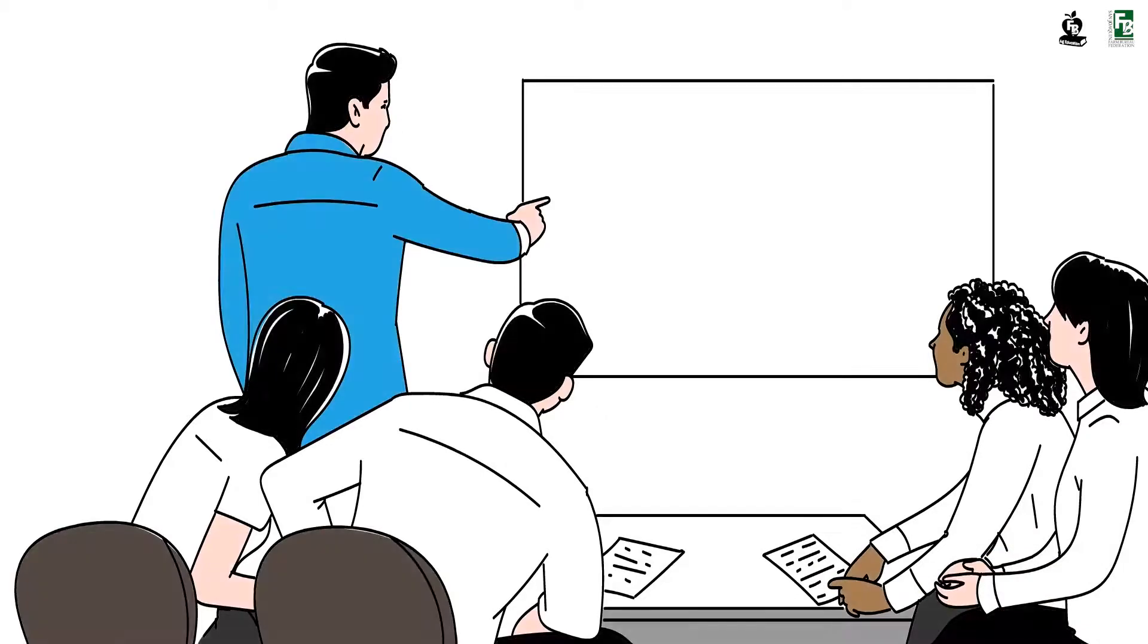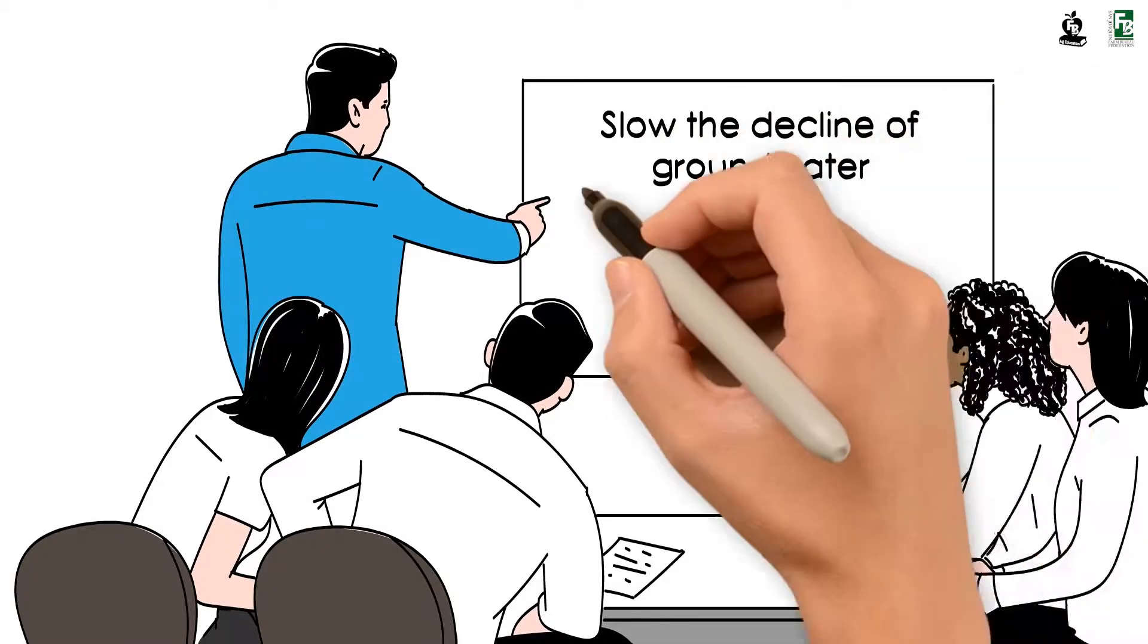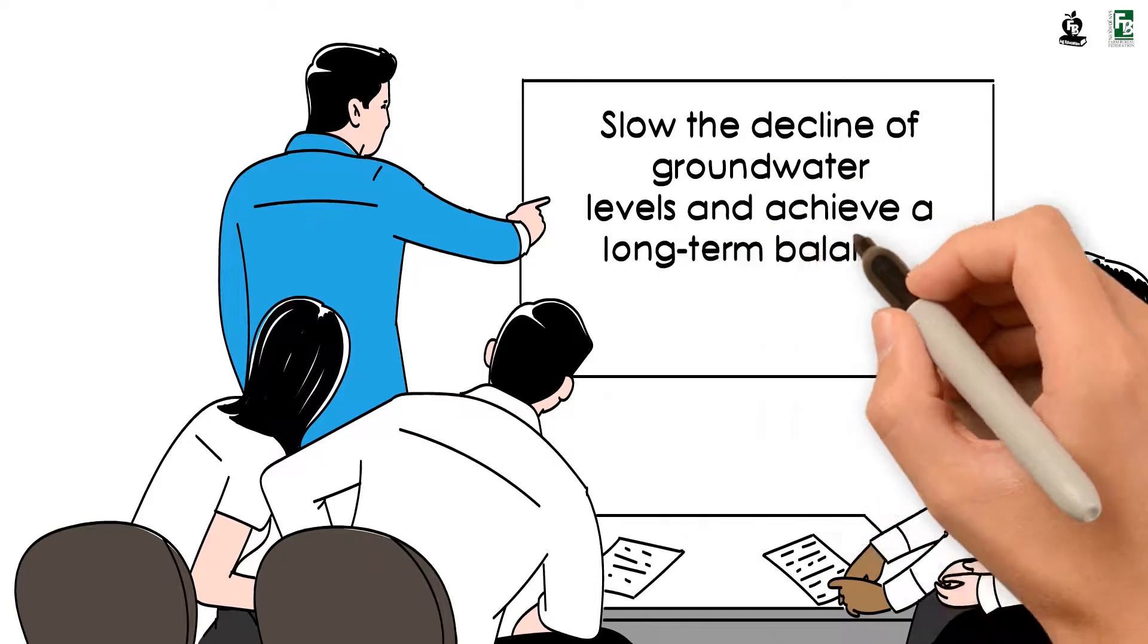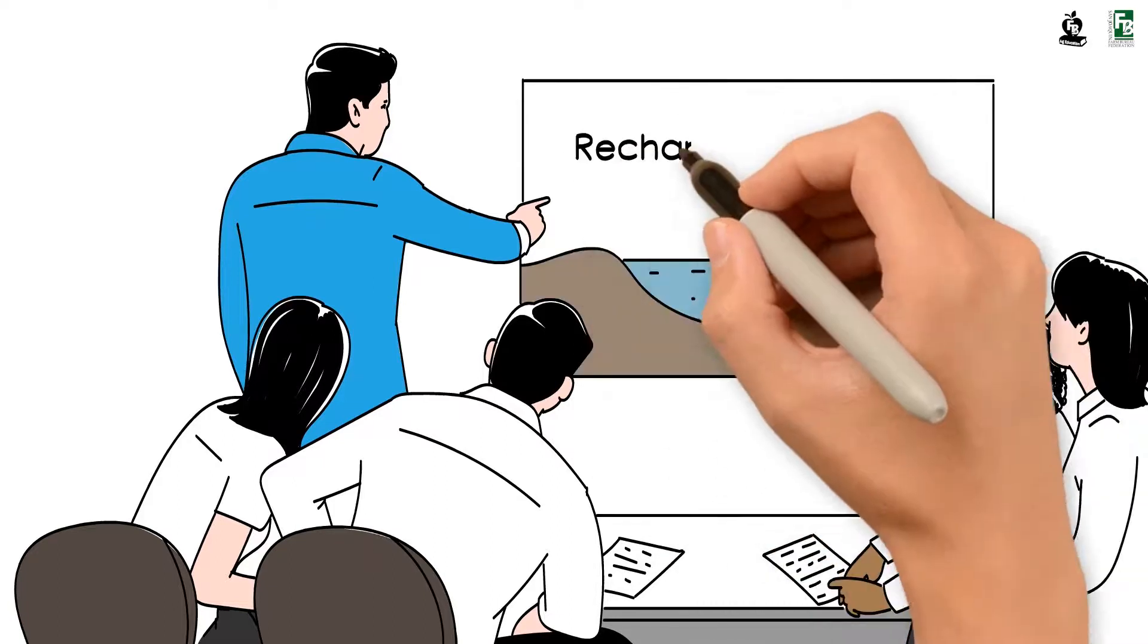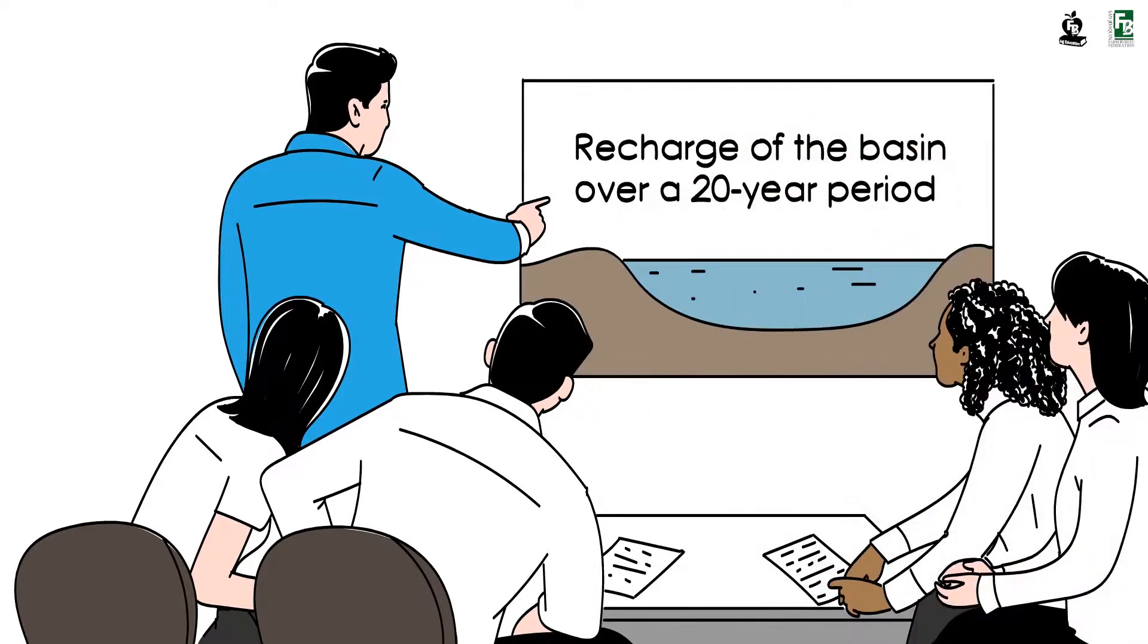The goal of the GSPs is to slow the decline of groundwater levels and to achieve a long-term balance between withdrawals and recharge of the basin over a 20-year period, beginning with the start of a local GSP.